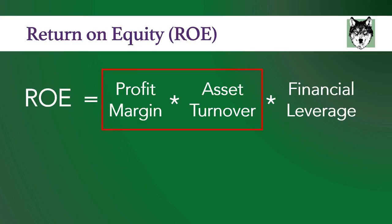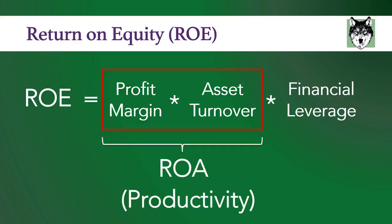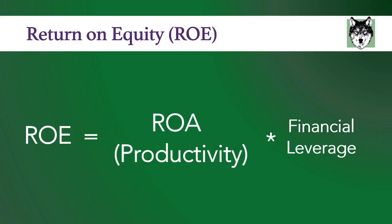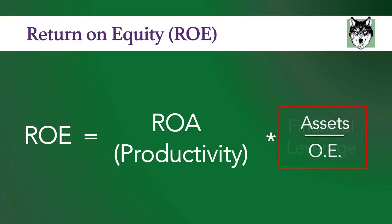You will also notice that profit margin times asset turnover is the same as return on assets, which is our good friend productivity. You can then shorten this equation to: return on equity equals productivity times financial leverage. This tells you something very important. Owners care about productivity, but they also care about capital structure — how much of the assets in a business come from owner's equity and how much comes from debt.